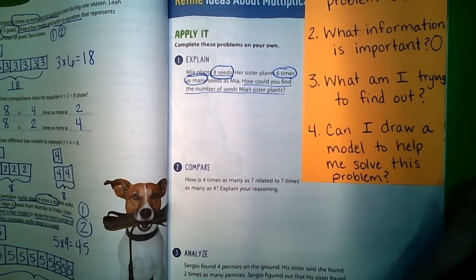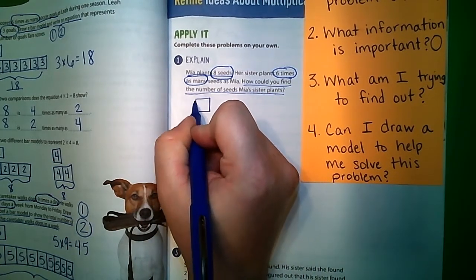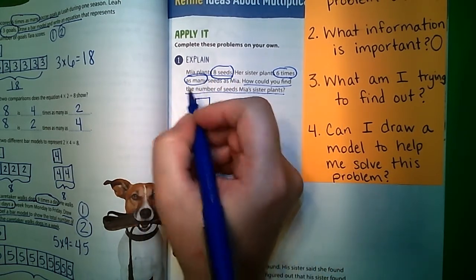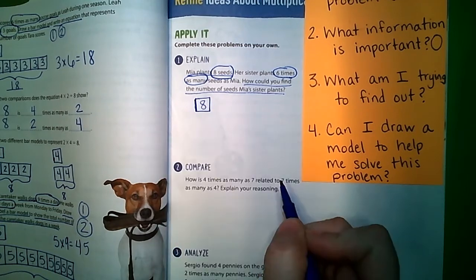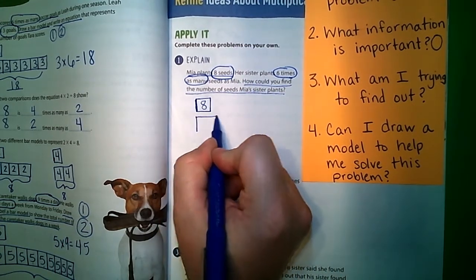And can I draw a model to solve this problem? And the answer is yes, I can. So my model is going to start out with one, and that is going to be the number of seeds Mia plants. She planted eight, but then it says her sister planted six times as many.